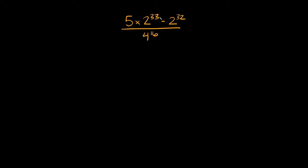Now, 2 raised to the 33rd power — how can we turn that into 2 raised to the 32nd power? Well, we basically just have to factor out a single 2. So 2 raised to the 33rd power is the same thing as 2 raised to the first power times 2 raised to the 32nd power. The reason that works is because whenever you have two numbers with the same base, you just add the exponents together — so 1 plus 32 equals 33.